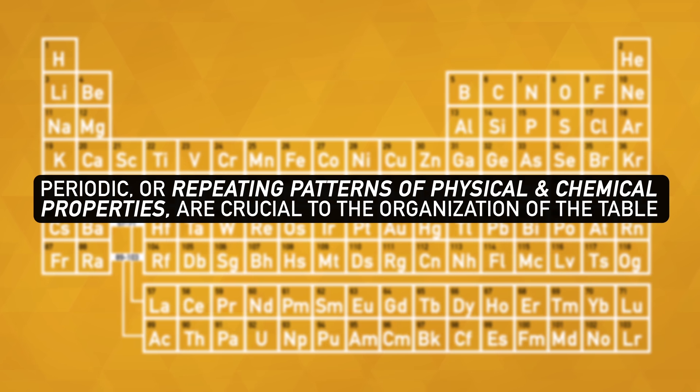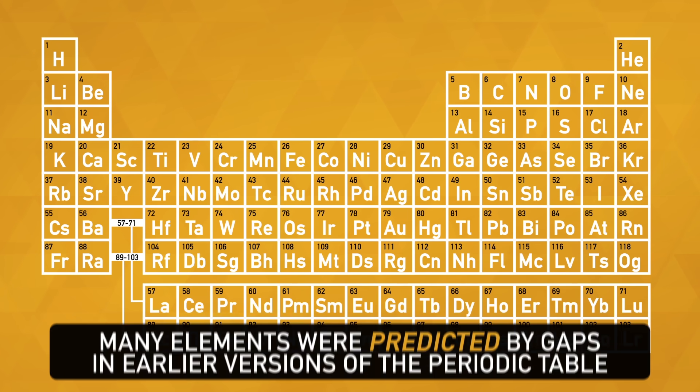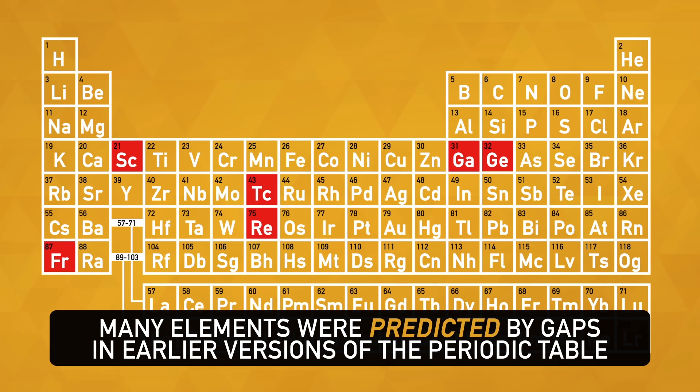Periodic, or repeating patterns of physical and chemical properties, are crucial to the organization of the table. These patterns even allowed scientists in the past to predict the properties of as of yet undiscovered elements just by looking at gaps in the table.